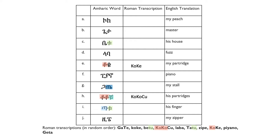Look at the scripts highlighted in blue — they are quite similar, with the only difference being their tails. From experience, this resemblance tells us that these two either share a consonant or a vowel. Did we see something like this before? The change in the position of the little circles? Yes — the two scripts in the E-row differ only in the position of the circles, and the circle in the bottom right gives the script a vowel E. So it's reasonable to assume that the script highlighted in dark blue in row G also has a vowel E.